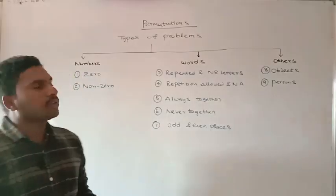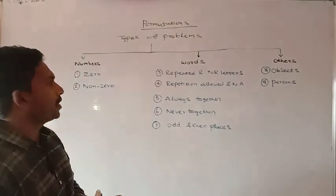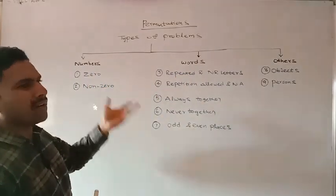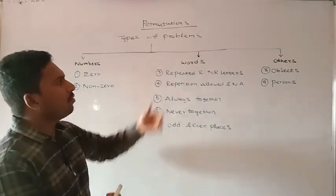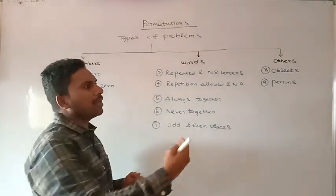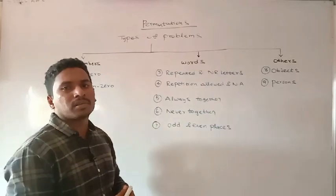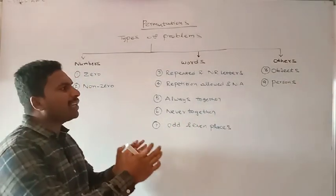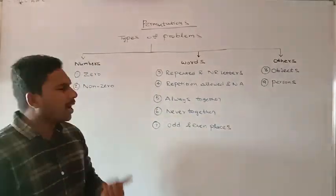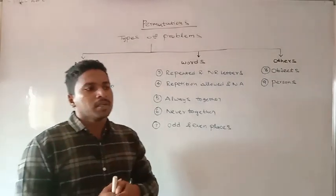Hello viewers, welcome to our channel. These are all the various types of problems most frequently asked in competitive exams. In total, nine types are there — three based on numbers, some based on alphabets or words, and others using objects, vehicles, or persons. These are the most frequently asked nine types of problems expected from permutations. We'll start with permutations and later cover combinations.